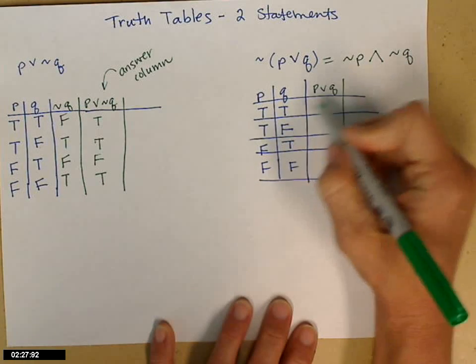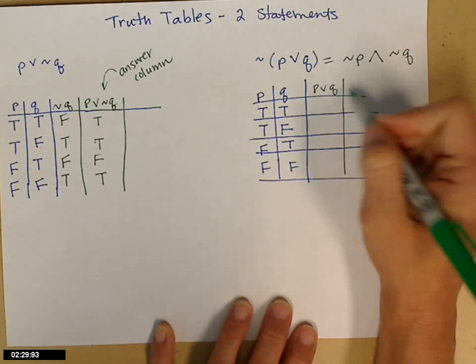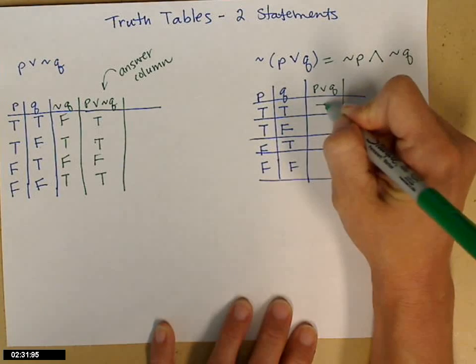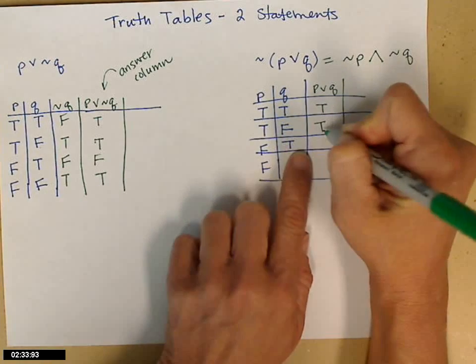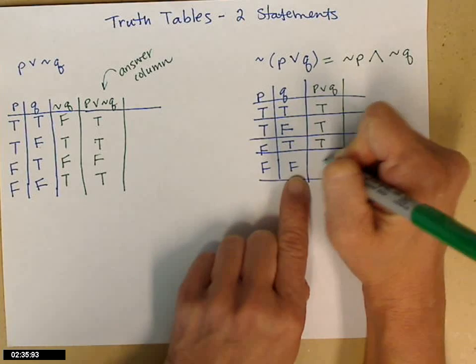So let's go ahead and write that column. Remember, if either one is true, then P or Q is true. So I'll go true, true, true, false.